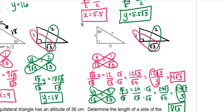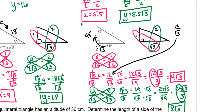For pattern people: you always need your small side first. To get to your small side, you always divide — in this case by the square root of 3. So 12 divided by the square root of 3 gives 4 square roots of 3. Then to get from the short side to the hypotenuse, always multiply times 2. And 4 times 2 is 8 square roots of 3.